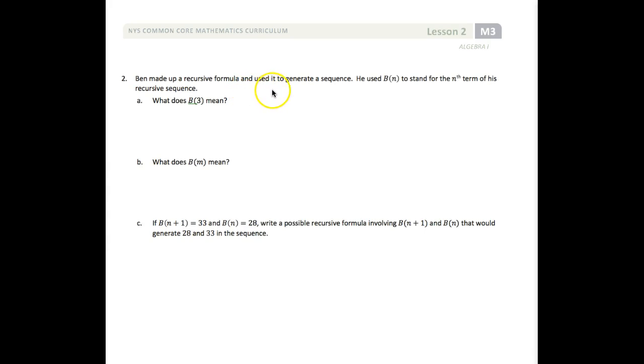Ben made up a recursive formula and used it to generate a sequence. He used the function b(n) to stand for the nth term of his recursive sequence. What does b(3) mean? It means the value of the third term in Ben's sequence.